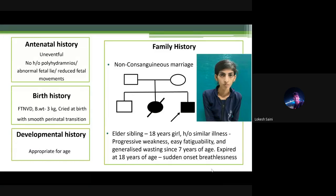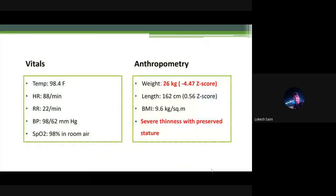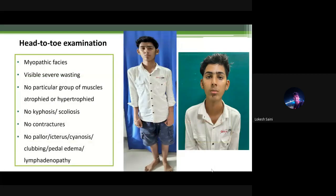A photograph of the deceased sibling was arranged after permission from parents. Vitals of the index child were essentially normal. On anthropometry, severe thinness with preserved stature was noted. Height was within normal standards but severe thinning was noted — BMI was just 9.6.